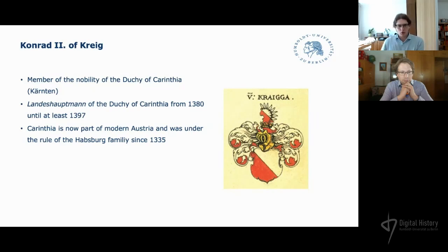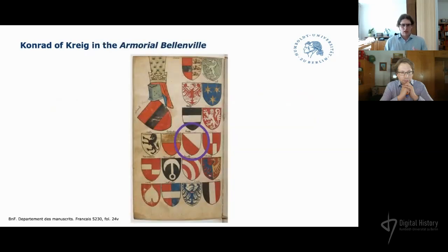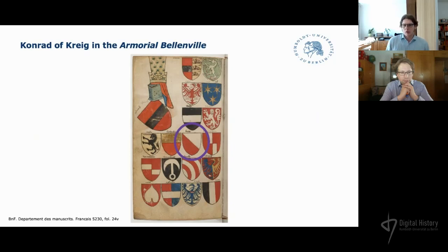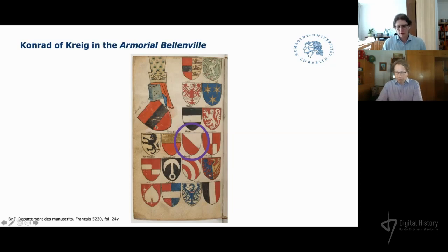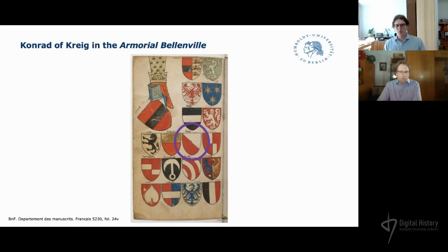Let's try to put these facts into a data model based on evidence from a single historical source. Here we have a page from the Armorial Bellenville. Armorials were medieval manuscripts that included collections of coats of arms, sometimes also depicting hierarchical relations between the represented actors. On this page we see the coat of arms of the Duke of Austria with his retinue, which includes also the coat of arms of Conrad of Kraig.